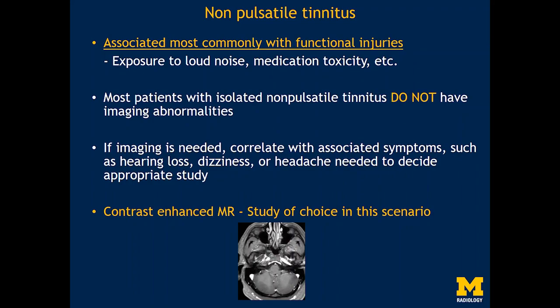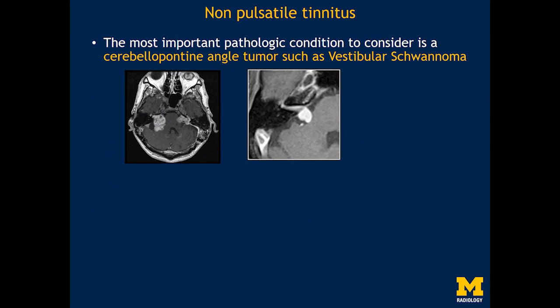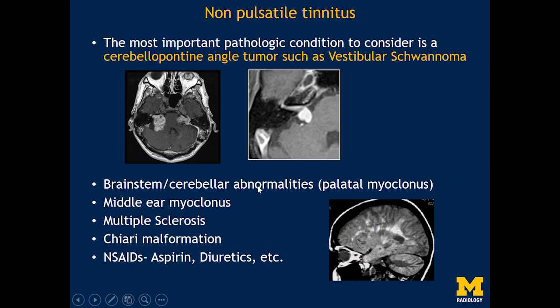For patients with non-pulsatile tinnitus, a contrast-enhanced MRI scan is considered the study of choice. We are primarily looking for a cerebellopontine angle tumor, which in most patients is going to be a vestibular schwannoma. An example of bilateral vestibular schwannomas is shown on the left and a unilateral vestibular schwannoma on the right. There can be other causes as well — including palatal myoclonus from brainstem or cerebellar abnormalities, and even multiple sclerosis. For the most part, patients will not have any positive imaging.